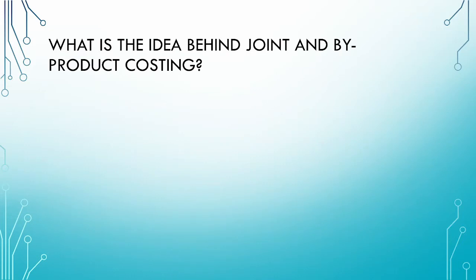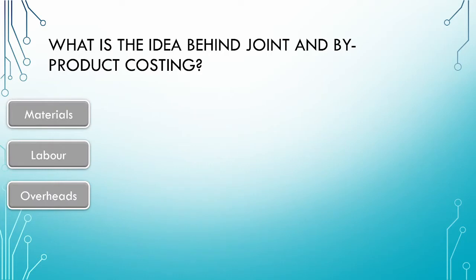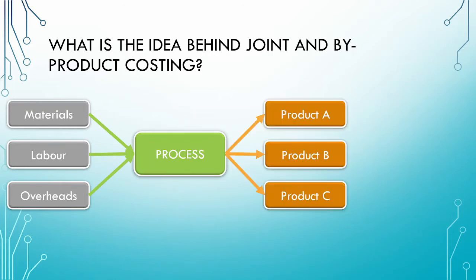In a joint process, we take our raw materials, labor, and overheads and subject them to the manufacturing process in order to get out multiple products simultaneously. For joint processes, we cannot distinguish between the different products until a specific point known as the split-off point. Before the split-off point, we cannot trace the costs to the individual products. Therefore, we need a consistent method to allocate the costs to the products.